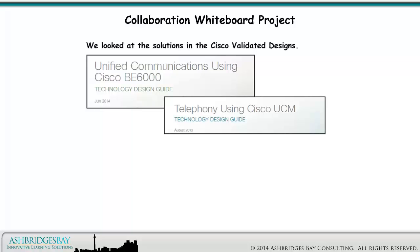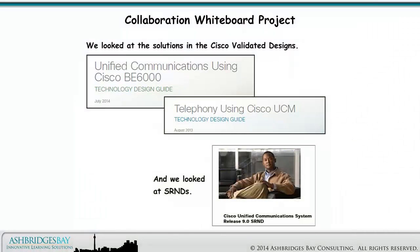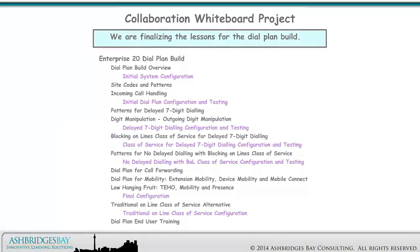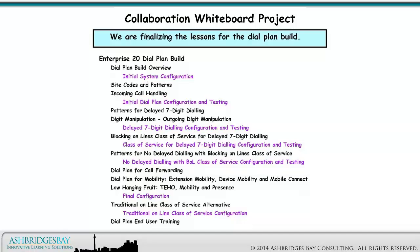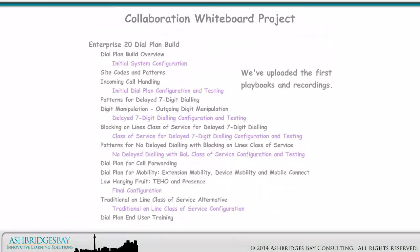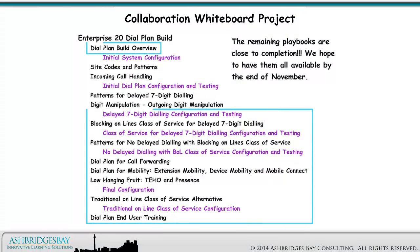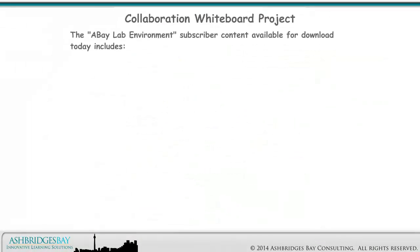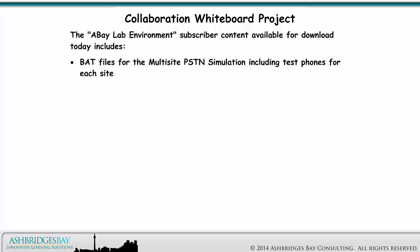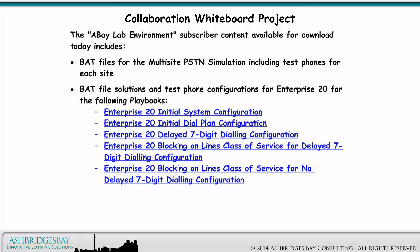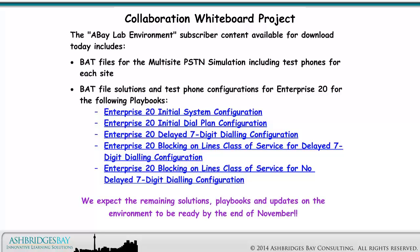We looked at the solutions in the Cisco Validated Designs and we looked at SRNDs. We are finalizing the lessons for the dial plan build. We've uploaded the first playbooks and recordings, and the remaining playbooks are close to completion — we hope to have them all available by the end of November. The ABAYLAB environment subscriber content available for download today includes BAT files for the Multi-Site PSTN simulation including test phones for each site, and BAT file solutions and test phone configurations for Enterprise 20 for the first playbooks. We expect the remaining solutions, playbooks, and environment updates to be ready by the end of November.